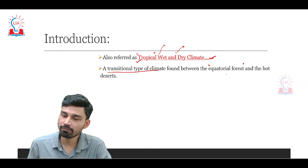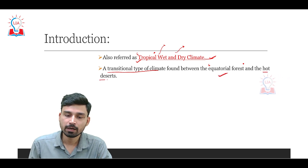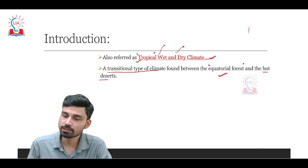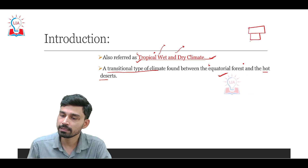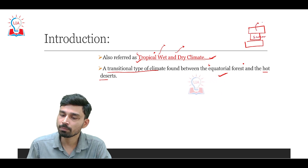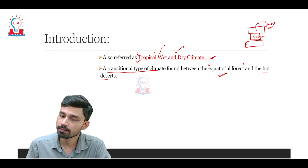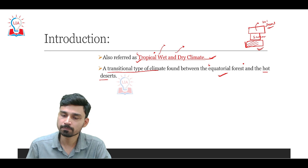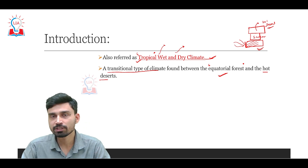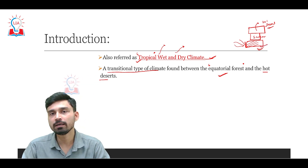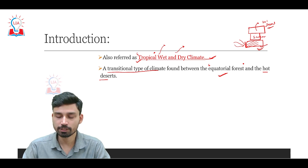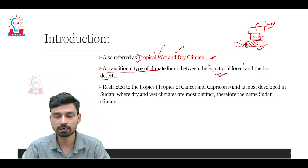On the southern side we have equatorial forest, and on the northern side of savannah climate we have the hot desert. The savannah type of climate has hot desert to the north — in Africa, the vast Sahara Desert — and equatorial forest to the south, where rainfall is quite higher and temperature is very high throughout the year, giving us abundant dense rainforest. That is why savannah is called a transitional type of climate.